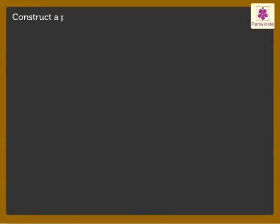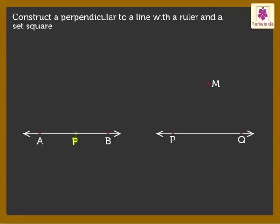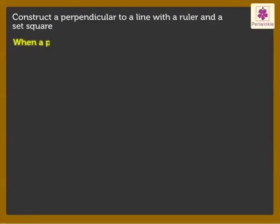Now let us see how to construct a perpendicular to a line with a ruler and a set square. The point through which the perpendicular will pass could be on the given line or outside the given line. First, let us see the construction when the point is on the line.